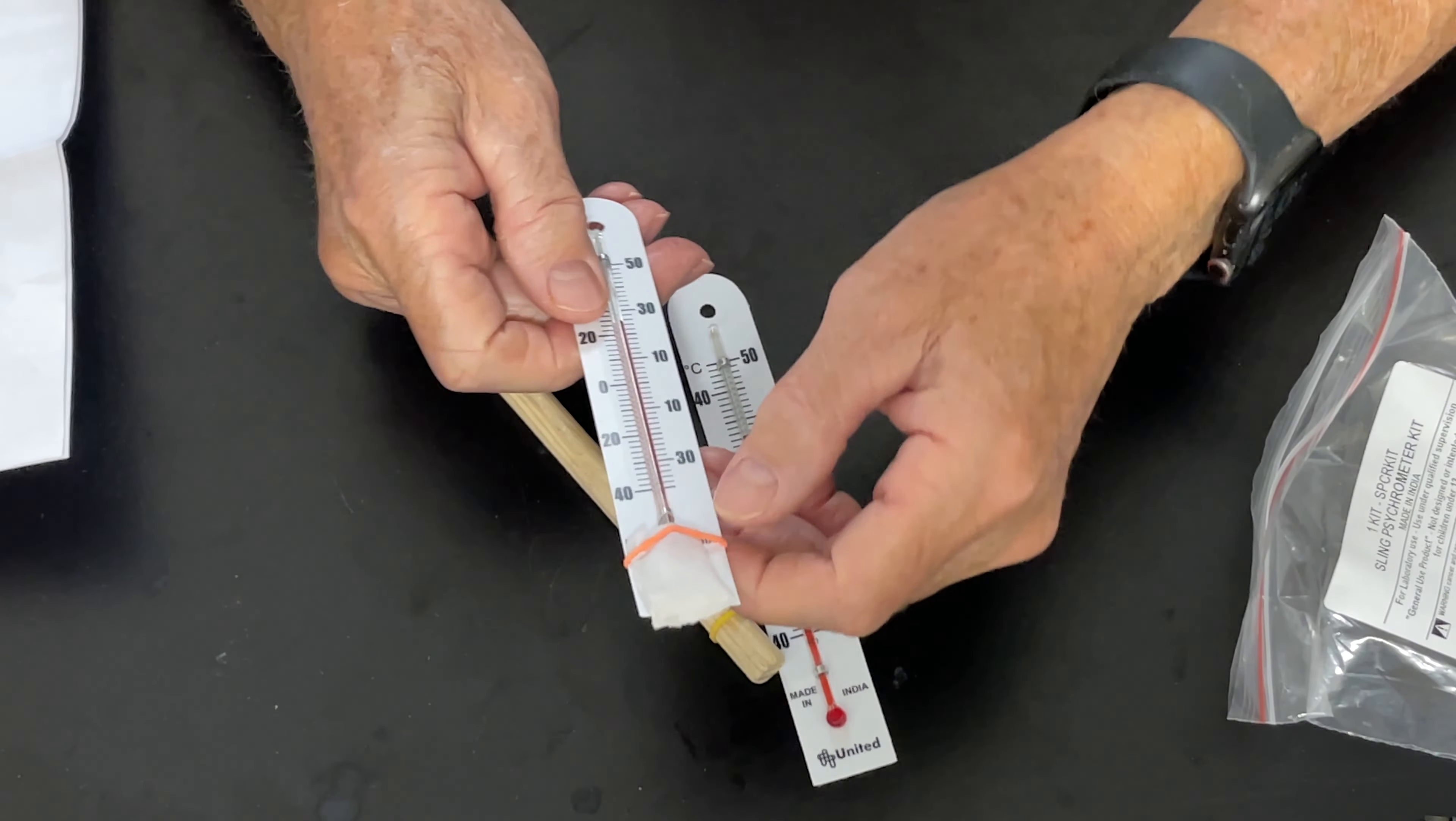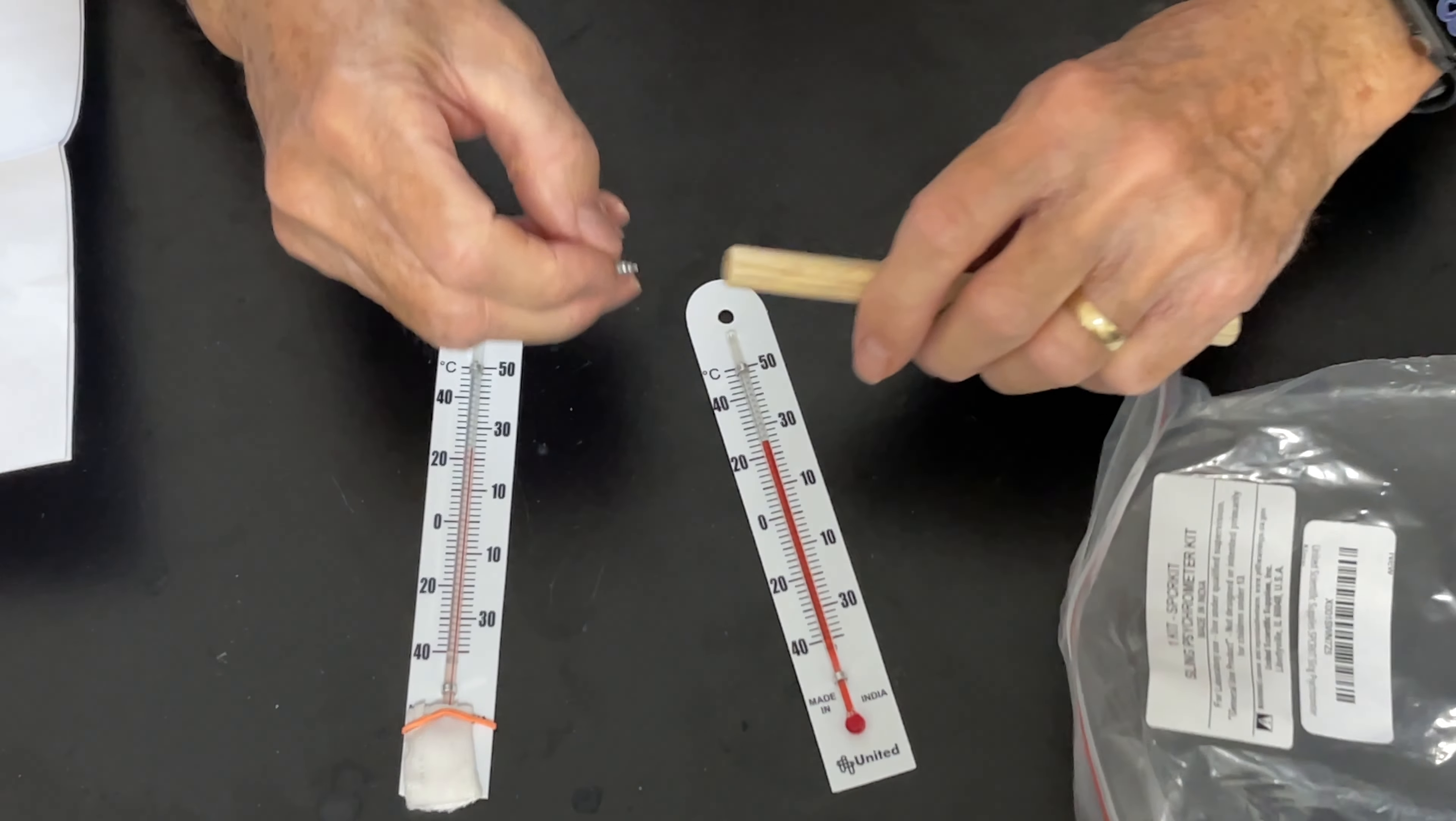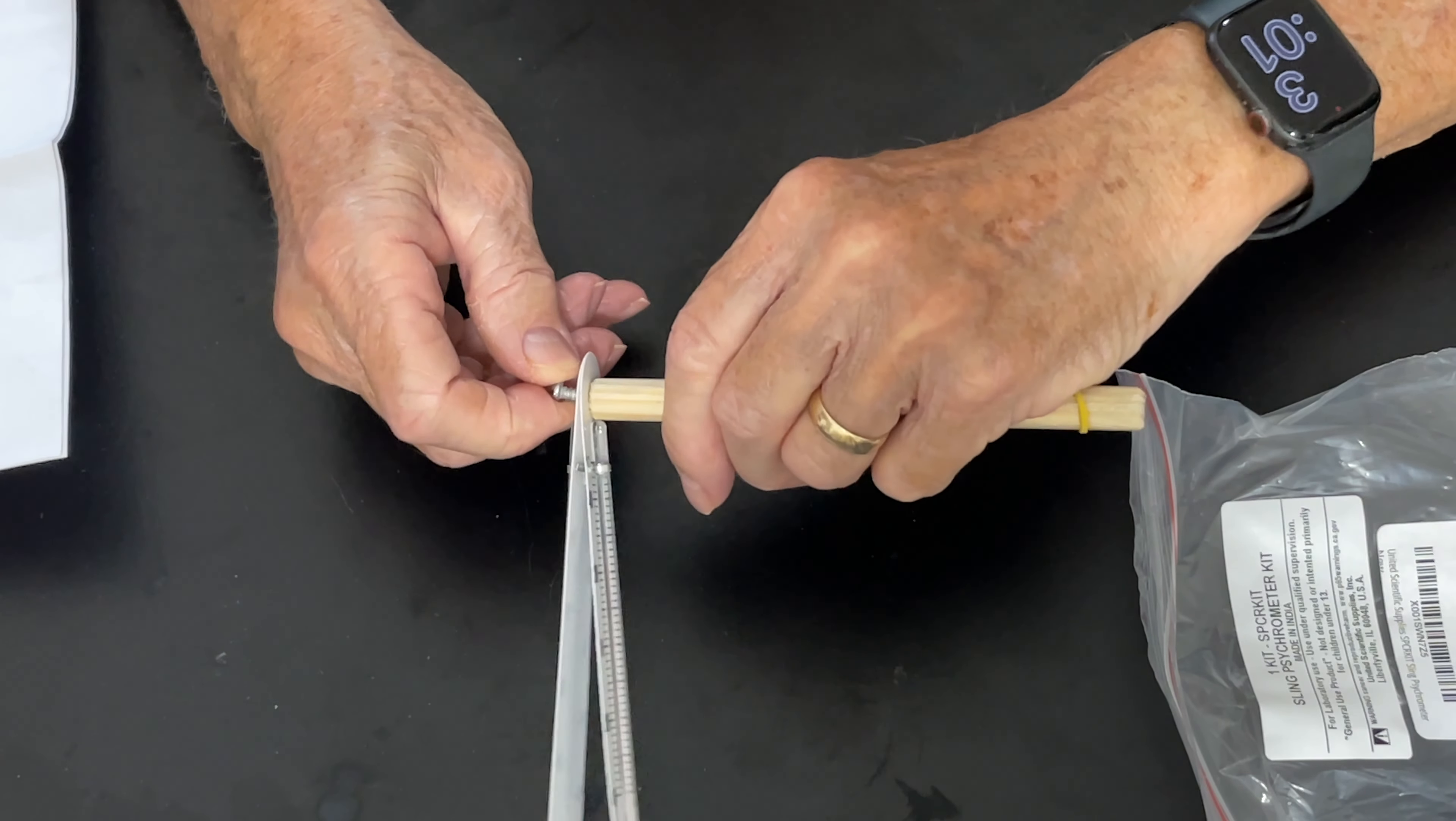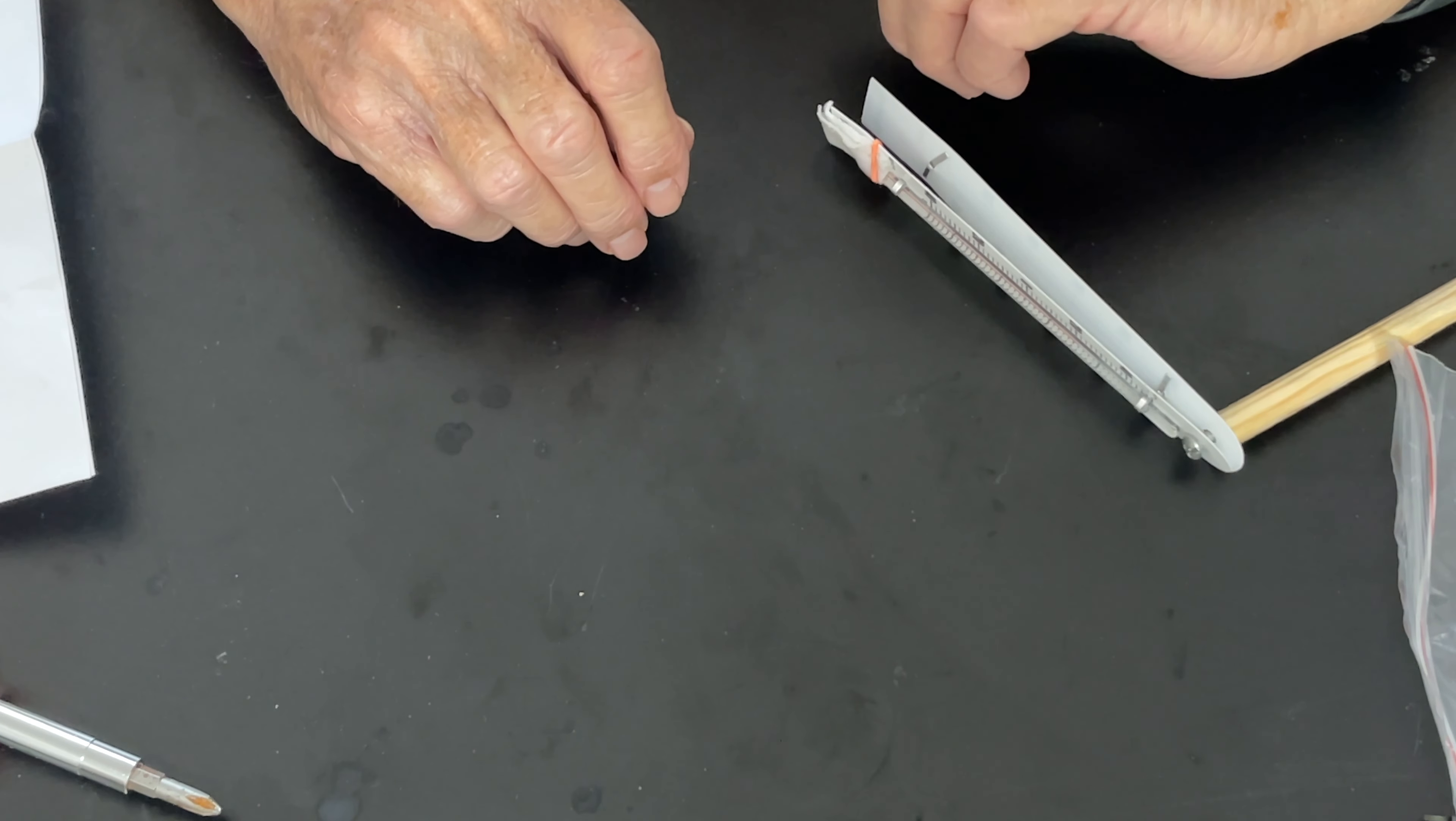Here's what's in the kit: two thermometers that are identical. One of them you get a little piece of fabric for wetting and making a wet bulb. I've already put it on here, it's very easy to do. They give you a couple rubber bands to hold that on there and just a handle to twirl them. You put them on like this back to back and screw that in. Make sure it's loose so it will swing freely.